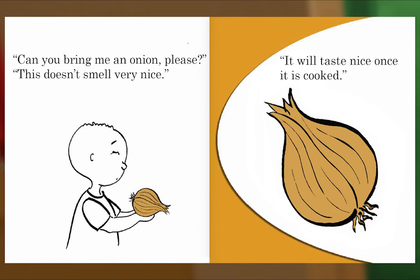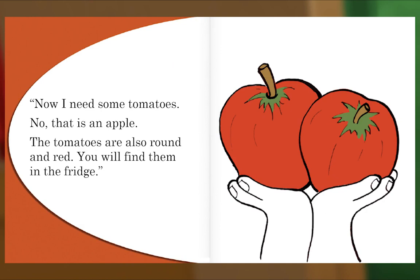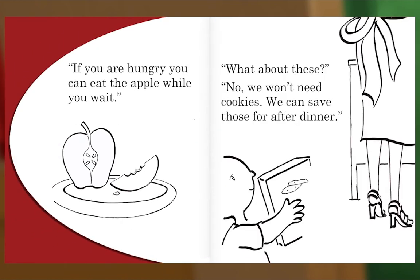'Can you bring me an onion please?' 'This doesn't smell very nice.' 'It will taste nice once it is cooked.' 'Now I need some tomatoes.' 'No, that is an apple. The tomatoes are also round and red. You will find them in the fridge.' 'Can you bring me potatoes? They are round and brown.' 'Is dinner ready yet?'